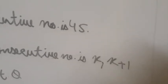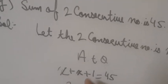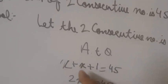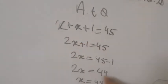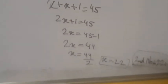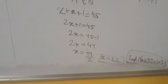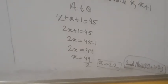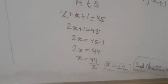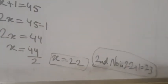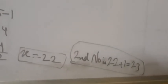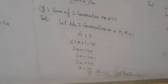According to the question: x + (x + 1) = 45. So 2x + 1 = 45. Bringing 1 to the right side: 2x = 44. Dividing by 2, x = 22. The second number is 22 + 1 = 23. That is the answer, children.